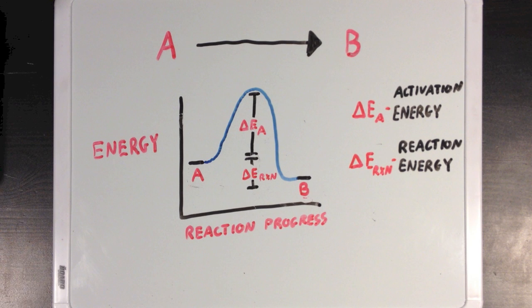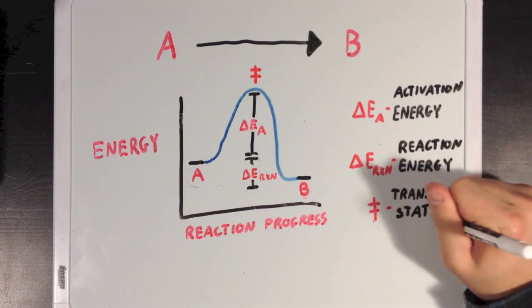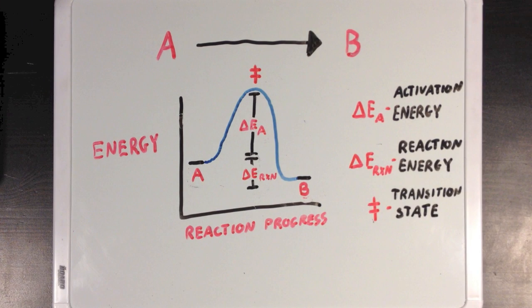Now reactions you typically look at will have their products at a lower energy than their reactants, since that makes the reaction spontaneous. Now the final term we want to look at is at the very top of the peak, which is where we find something called the transition state energy. And the transition state of a reaction is the highest energy point on the path from A to B, and it's where you'll find the most instability throughout the entire reaction.